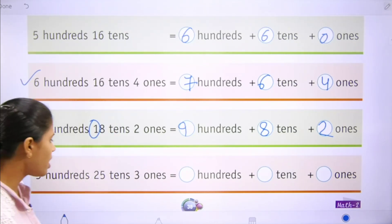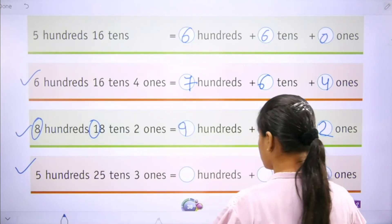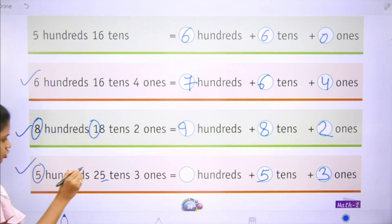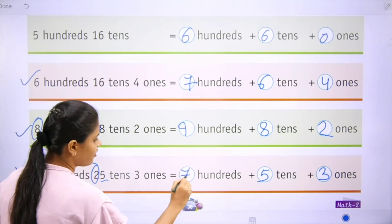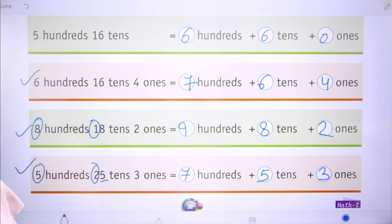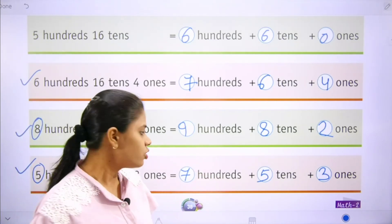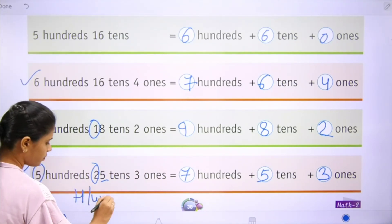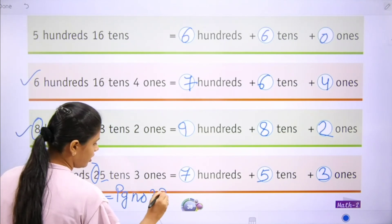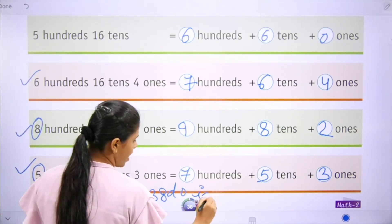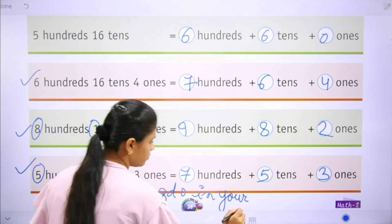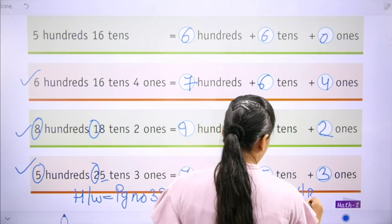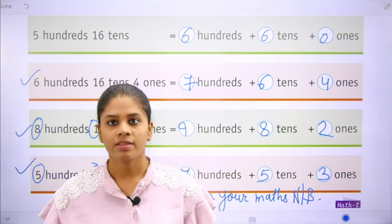Now move towards the last part: 3 ones, 5 tens, and 5 plus 2 is 7 — that is 753. Students, page number 38 is your homework — do it in your maths notebook as well as in your book. That's all for today, thank you class.